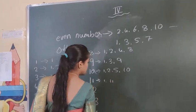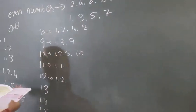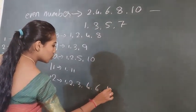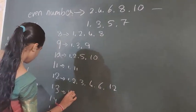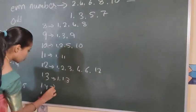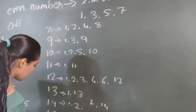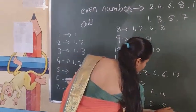Eleven: 1, 11. Twelve: 1, 2, 3, 4, 6, 12. Thirteen: 1, 13. Fourteen: 1, 2, 7, 14. Fifteen: 1, 3, 5, 15.